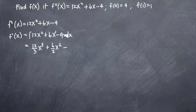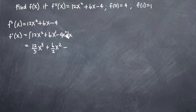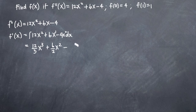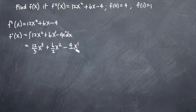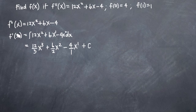Finally we get to the 4. We can think of it as 4 times x to the 0 — anything to the 0 power is equal to 1, so 4 times 1 is just 4. This term follows the same pattern as the last two: we add 1 to the exponent, 0 plus 1 gives us 1, and then we take the coefficient, 4, and divide it by the new exponent, 1. And as with any integral, whenever you take the integral you have to add c, the constant of integration, to account for a constant that may have been in f prime of x that got lost when we took the derivative to get f double prime of x.